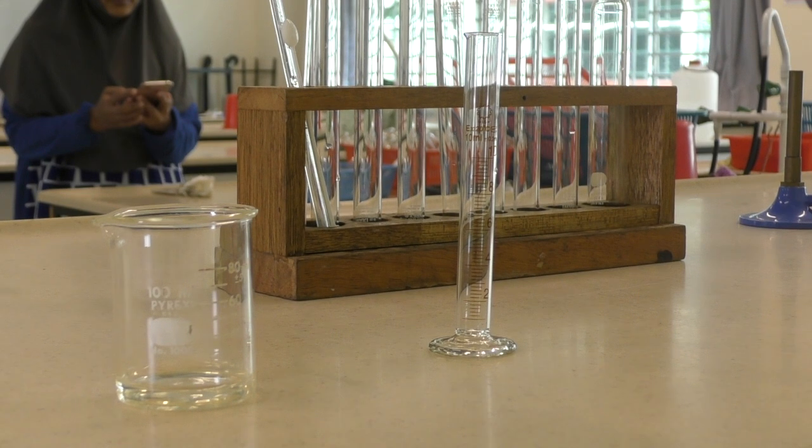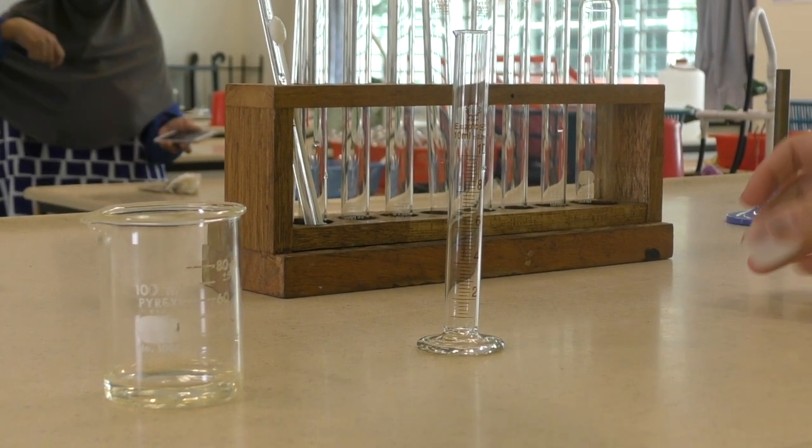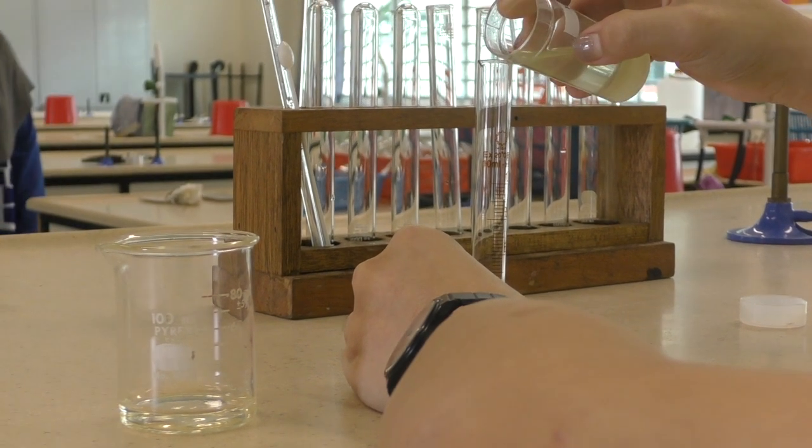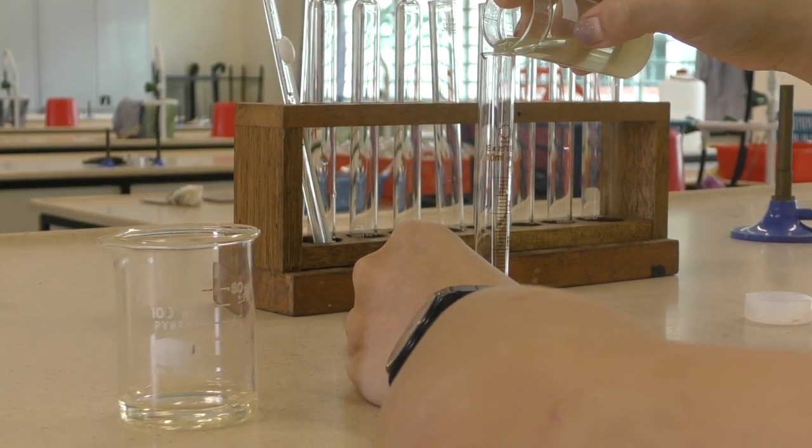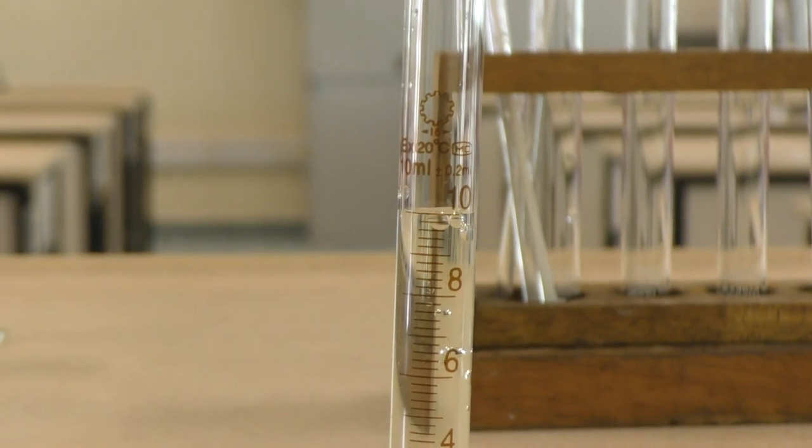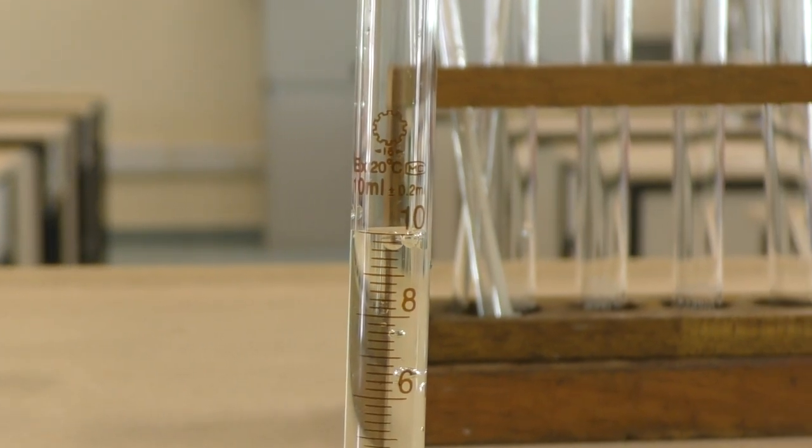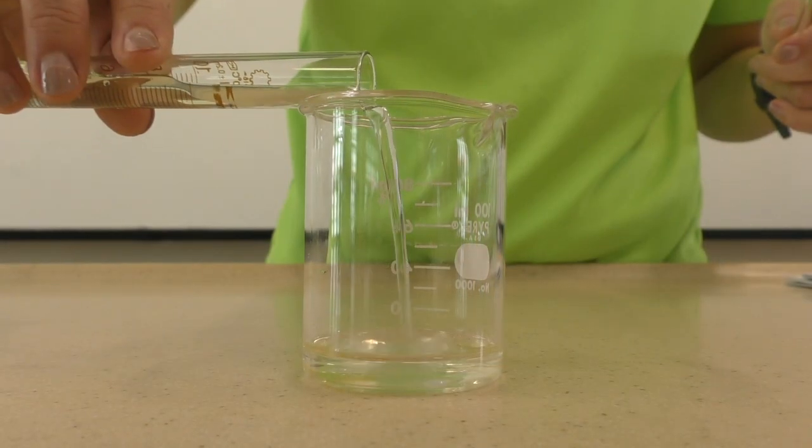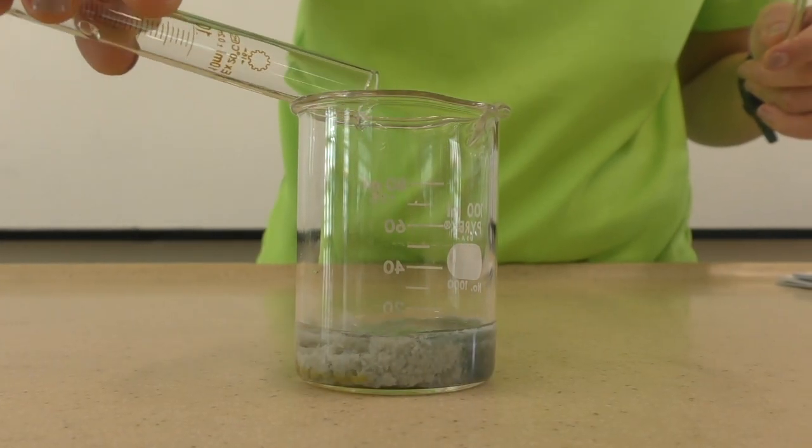Use a different measuring cylinder to transfer 10 cm³ of Solution Y. Similarly, read the volume at eye level. Take the measurement from the bottom of the meniscus. Transfer Solution Y to the same beaker.